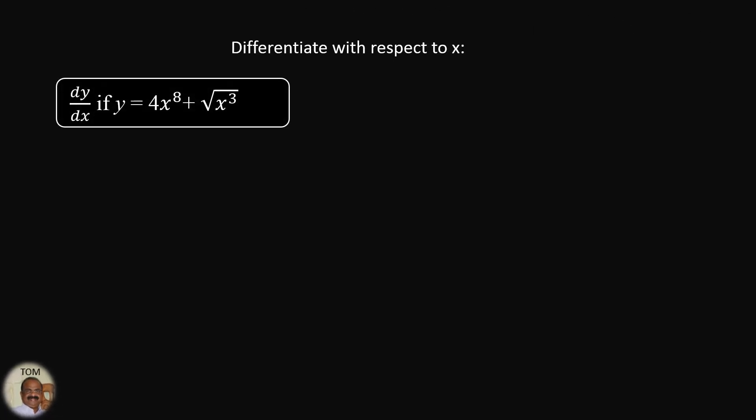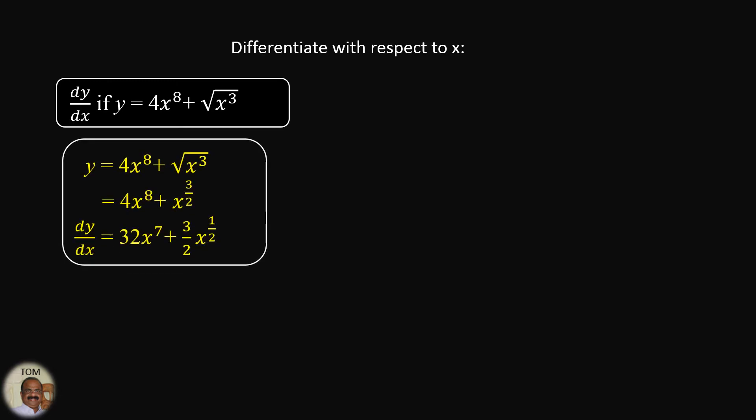Find dy/dx if y = 4x⁸ + √(x³). We write √(x³) as x to the power 3/2 since it is inside the square root. Differentiating: derivative of 4x⁸ is 32x⁷ (since 8 times 4 gives 32). For the second term, (3/2) times x to the power 3/2 minus 1 gives x to the power ½.